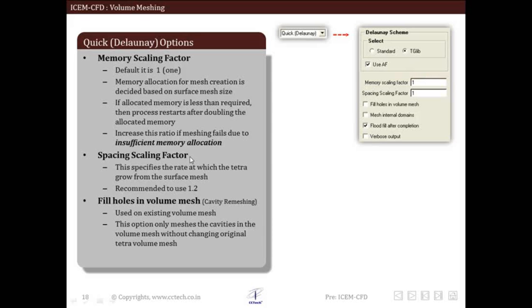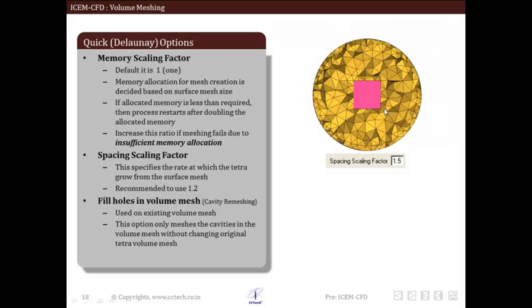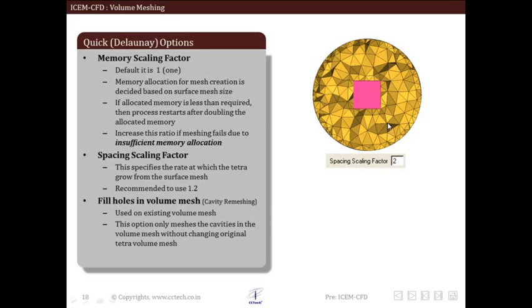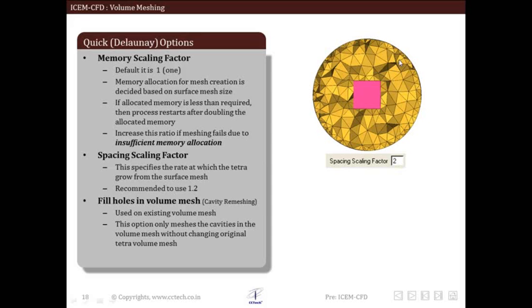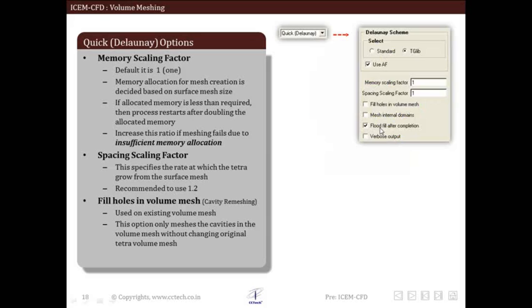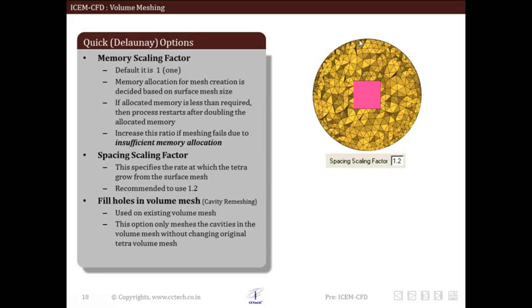Next is the spacing scaling factor. Smooth transition in mesh means that element size does not change quickly, which results in a mesh with large cell count. ICEM gives the user control over this growth ratio. Too small a ratio will increase the cell count and too large a ratio will create mesh not suitable for CFD analysis. It is recommended to keep the spacing scaling factor below 1.2. If increased above 1.5, there are chances the case may not converge properly. Use 1.2 as the recommended value; only use a maximum of 1.5 if 1.2 is not feasible. A spacing scaling factor of 2 creates a highly skewed mesh.